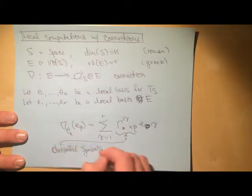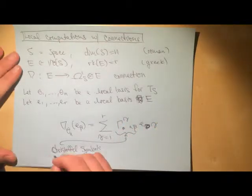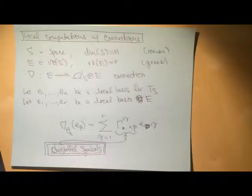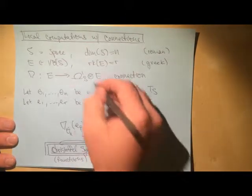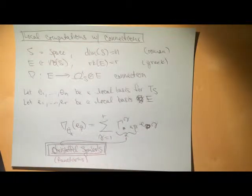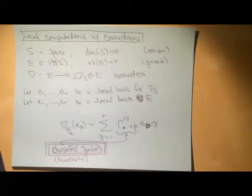So Christoffel symbols. So they depend on this open set that we used to trivialize the vector bundle, the vector bundle and the tangent bundle simultaneously. These are Christoffel symbols. And then I talked about this Levi-Civita connection, and usually these are referred to in this Levi-Civita context. But it's useful to talk about them here too. So these guys are the Christoffel symbols, and these are the things that you compute with.